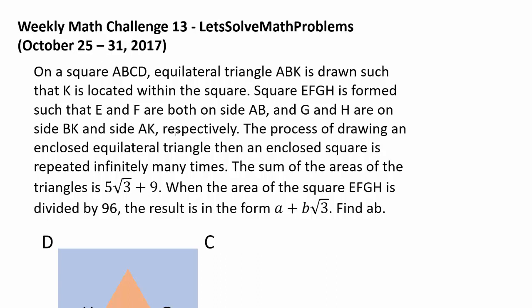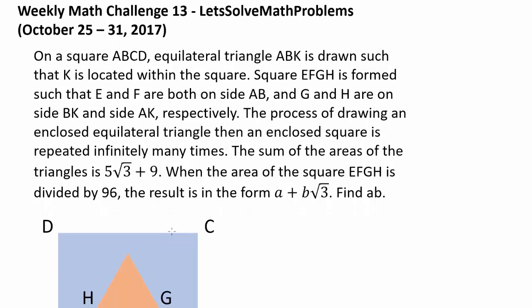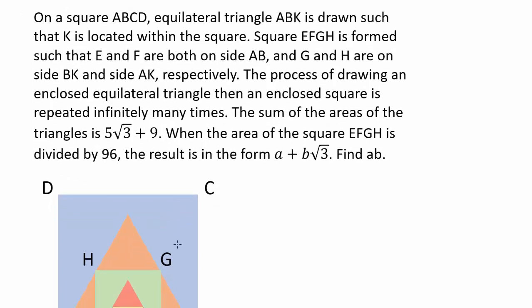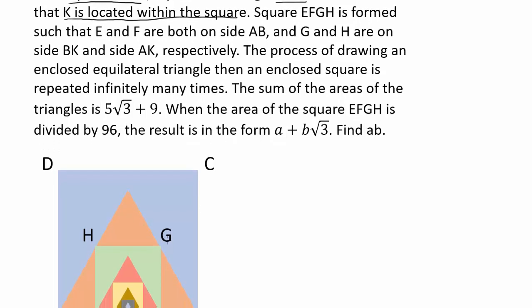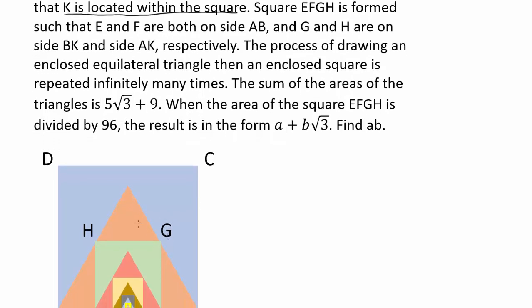Let's now try to answer weekly math challenge 13. So we have a diagram given to us, which is always nice. We have a square ABCD and equilateral triangle ABK, and we know K is located within the square. That's telling us our vertex K is this point right here, so let me mark that. So we know that's K.